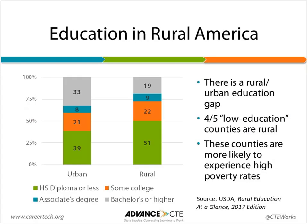To paint the landscape of rural education, there's a significant education gap between rural and urban adults. Only 28% of rural adults hold an associate's degree or higher, compared to 41% of urban adults. A lack of education in rural areas is often associated with higher poverty. According to the U.S. Department of Agriculture, four out of five low-education counties are rural, and these counties are more likely to experience high rates of poverty. While economic activity often gravitates toward urban hubs, rural areas still offer many opportunities for gainful employment and career success. The challenge for states is figuring out the right approach to improve access and close the rural-urban education divide.